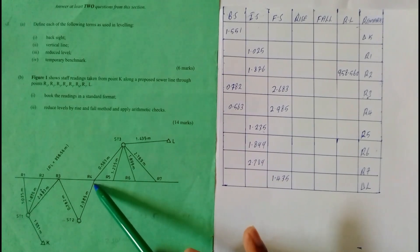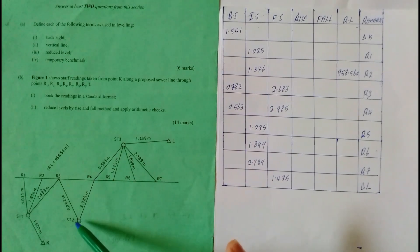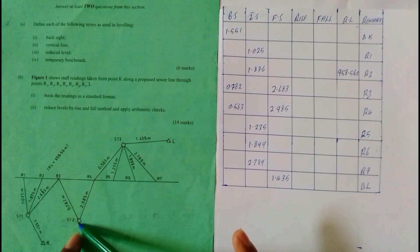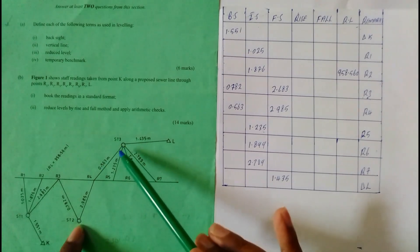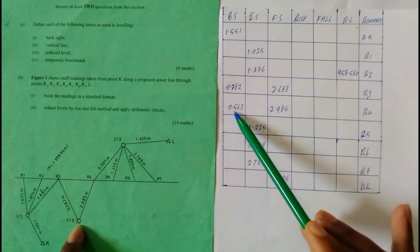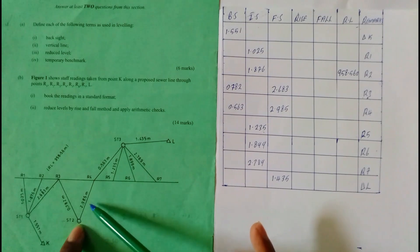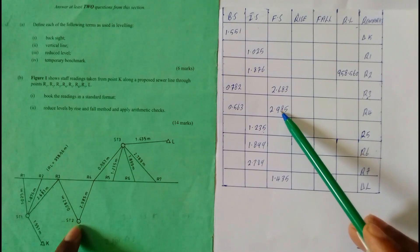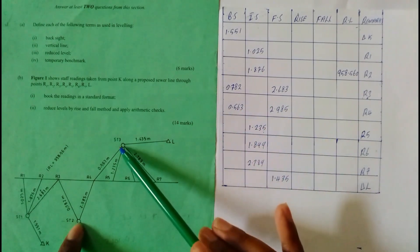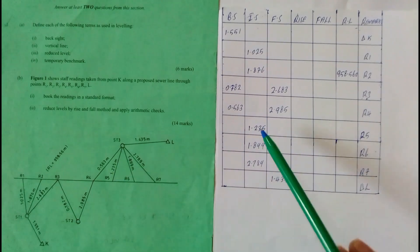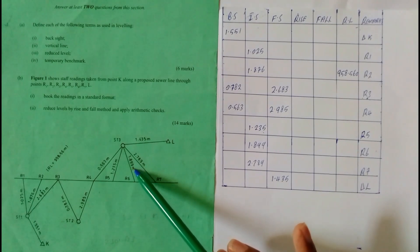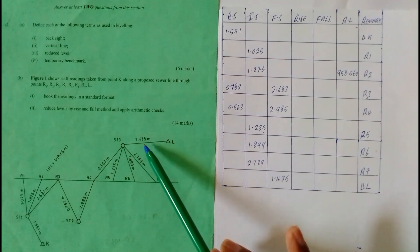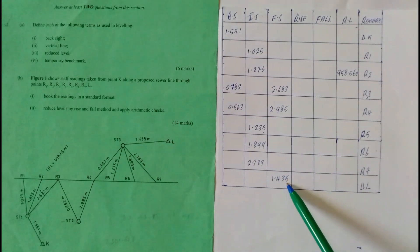Then we have the staff at point R4, reading it from station 2 and also station 3. From station 2 we will have a backsite of 0.563, and a foresight of 2.985. From station 3 we have an intermediate site of 1.235, another of 1.899, another of 2.978, and then a foresight closing the survey of 1.435.